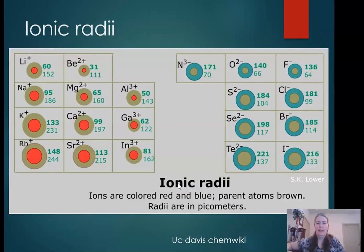Another trend we can look at is ionic radii. On here we have the radius of the ion, that's the top number, and the radius of the neutral atom, that's the bottom number. The neutral atom is in brown and the comparative ionic radii is colored on the side. Over here we have the neutral atom and the blue is the ion. There's a couple of things that we can see here.